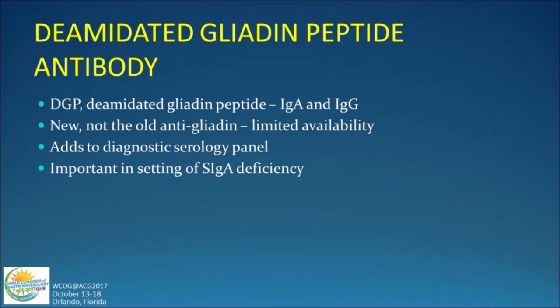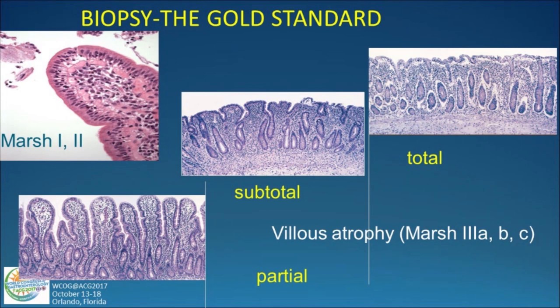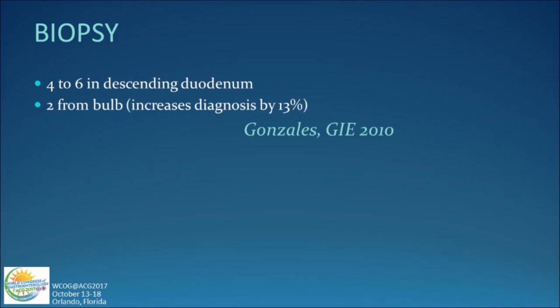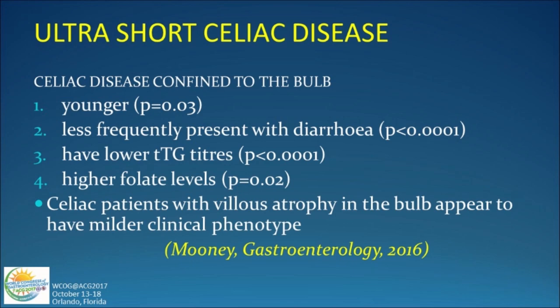These IgG antibodies are very important in the setting of selective IgA deficiency, which occurs 10 to 20 fold more commonly in those with celiac disease. Currently the biopsy is the gold standard. We see a lot of reports of MARSH-1 lymphocytic duodenitis in the absence of villus atrophy; it's very difficult to label someone with celiac disease and a lifelong gluten-free diet in the absence of villus atrophy. The presence of celiac disease just in the duodenal bulb has been termed ultra-short celiac disease.